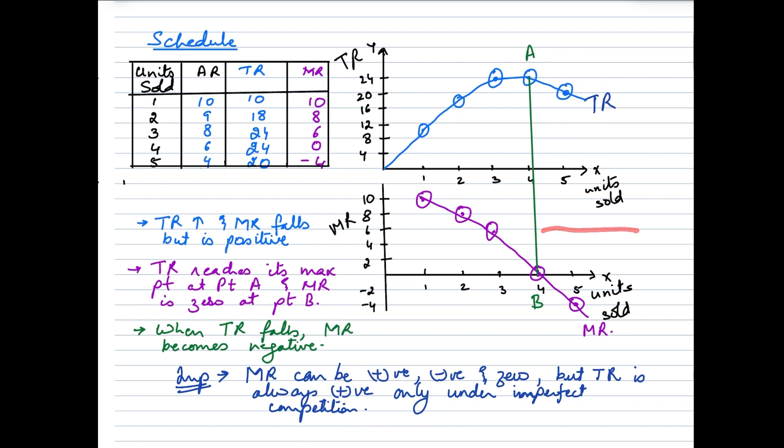Another important thing when it comes to these questions is in your exam, if your question remains silent as to which market segment you are supposed to discuss the relationship between TR and MR, it'll be wise to write about both the market segments, as in perfectly competitive markets and imperfect competitive markets. If your question is specifically mentioning a specific market structure, say for example you're supposed to give the relationship between TR and MR under perfectly competitive markets, then stick to perfect competition.